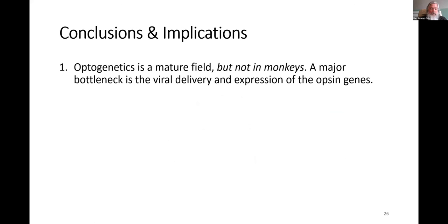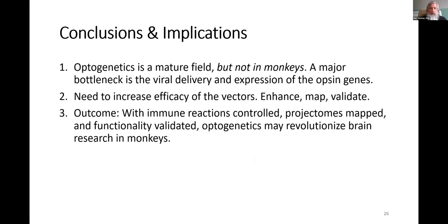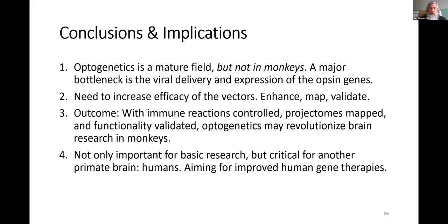So in conclusion, optogenetics is a mature field, but not in monkeys. A major bottleneck is the viral delivery and expression of the opsin genes. We need to increase the efficacy of the vectors overall, enhance, map, and validate them. Now the outcome here, if we can control the immune reactions, if we can map the projectomes and validate the functionality, optogenetics may revolutionize brain research in monkeys as it has in other smaller lab animals. This is not only important for basic research, but critical for another primate brain, the human brain. One of the long-term goals here is to improve human gene therapies for brain disorders.